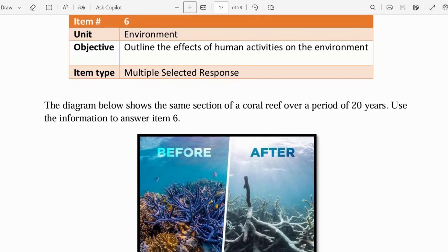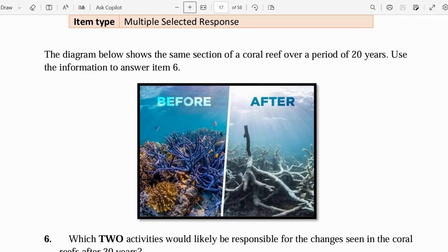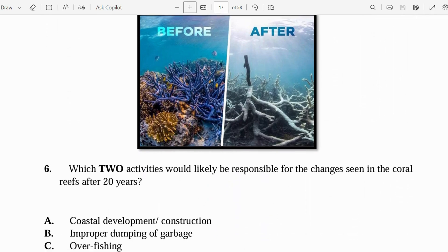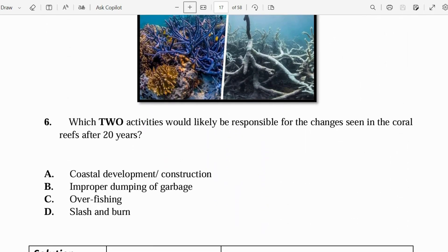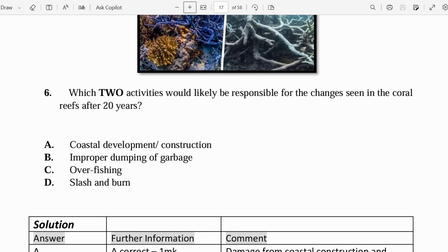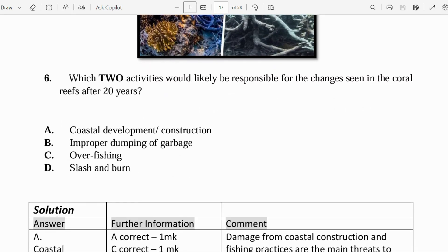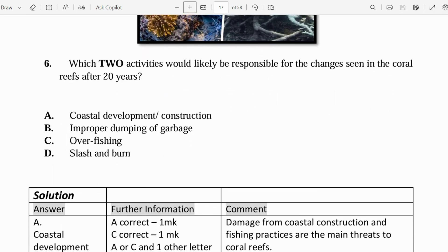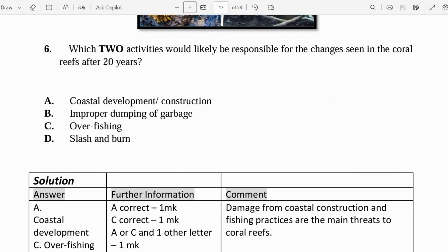Let's move on to number six. The diagram below shows the same section of a coral reef over a period of 20 years. Use the information to answer item six. So we can see the before coral reef and we see the after of the coral reef. Which two activities would likely be responsible for the changes seen in the coral reefs after 20 years? Is that coastal development and construction, improper dumping of garbage, overfishing, and slash and burn? Coastal development and overfishing damages the coral reefs. So the damage from the coastal construction and fishing practices are the main threats to the coral reef.